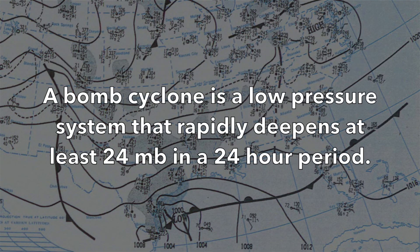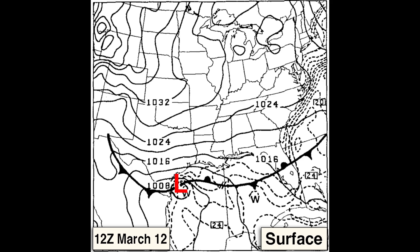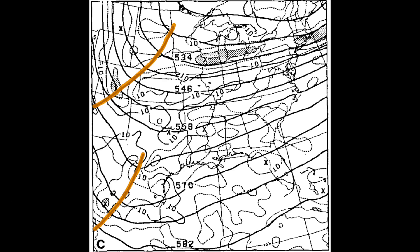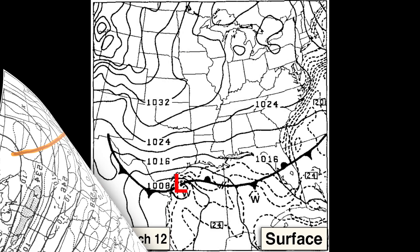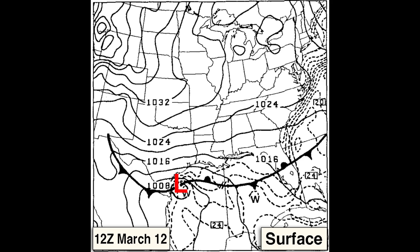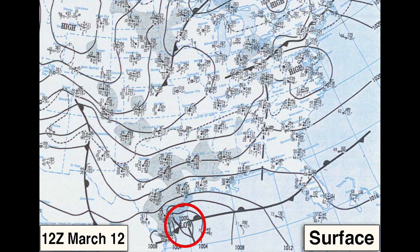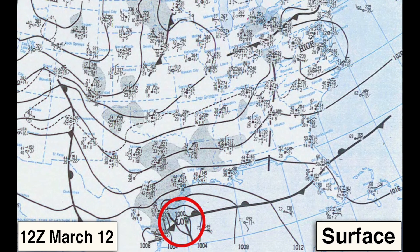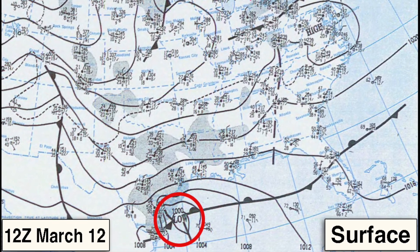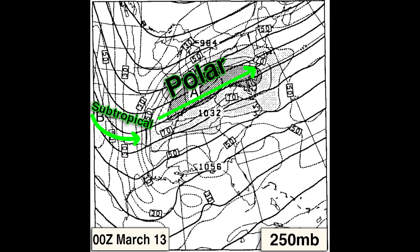A bomb cyclone is a low-pressure system that rapidly deepens at least 24 millibars in a 24-hour period. Around 12 UTC on March 11th, a surface low-pressure area had formed over northern Mexico. At the 500 millibar level, roughly 18,000 feet, a trough was approaching from the west, and an even stronger mid-level trough was gaining strength further upstream over the Rockies. Something interesting was that surface water temperatures were about 3 degrees Celsius above normal for March. The polar and subtropical jet streams began to phase together and deepen.